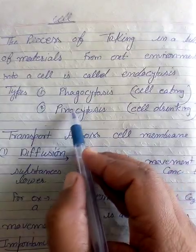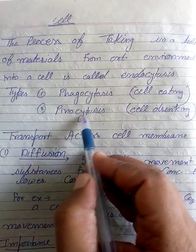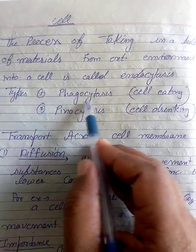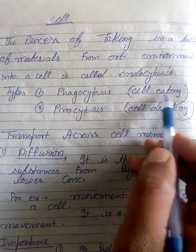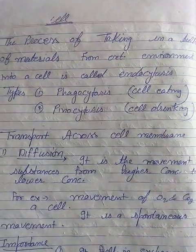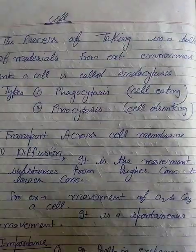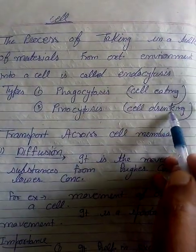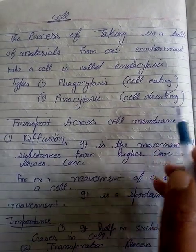The two types are phagocytosis and pinocytosis. Phago means cell eating — taking in solid material. And pinocytosis means cell drinking — taking in liquid material.